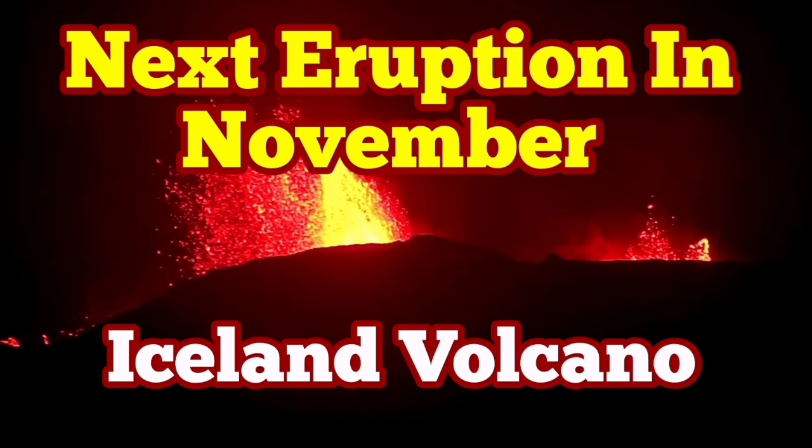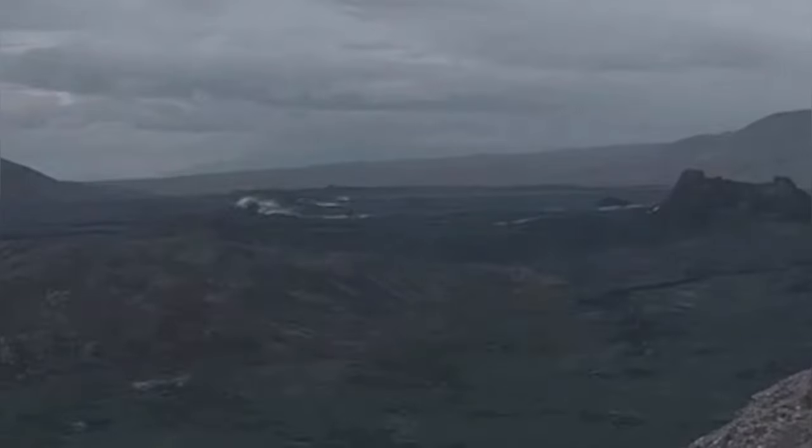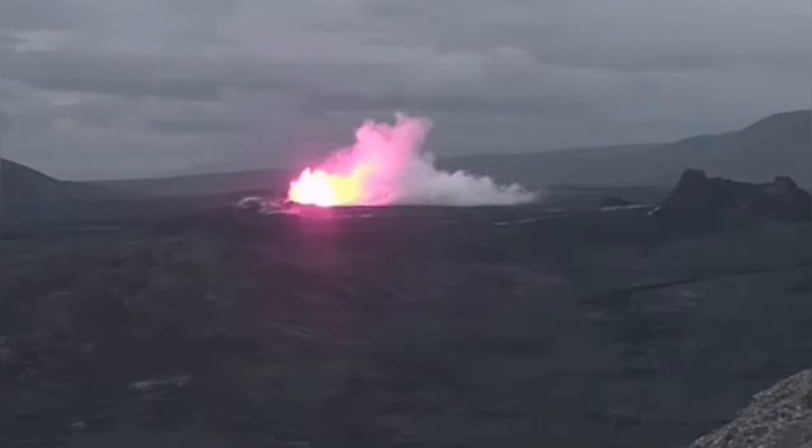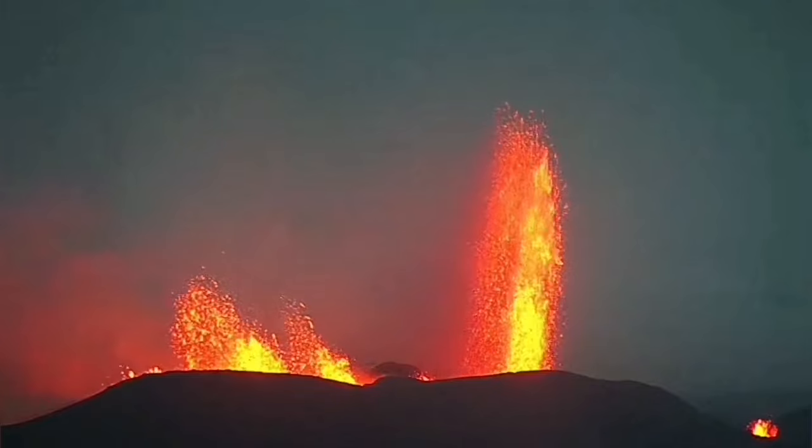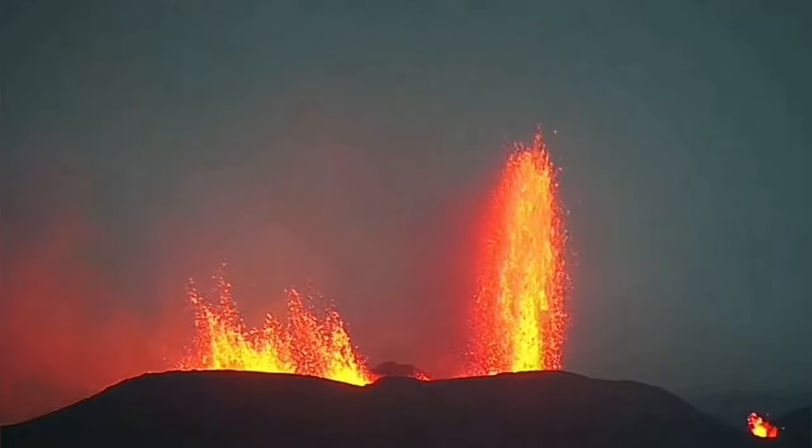The sixth eruption of the Svartsengi volcanic system in the Reykjanes Peninsula of Iceland started vigorously and created huge fountains up to 175 meters tall. In the night, you could see them from far distance.